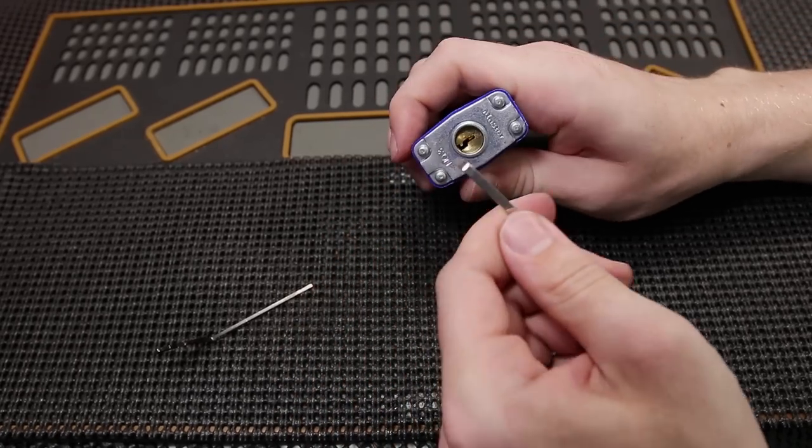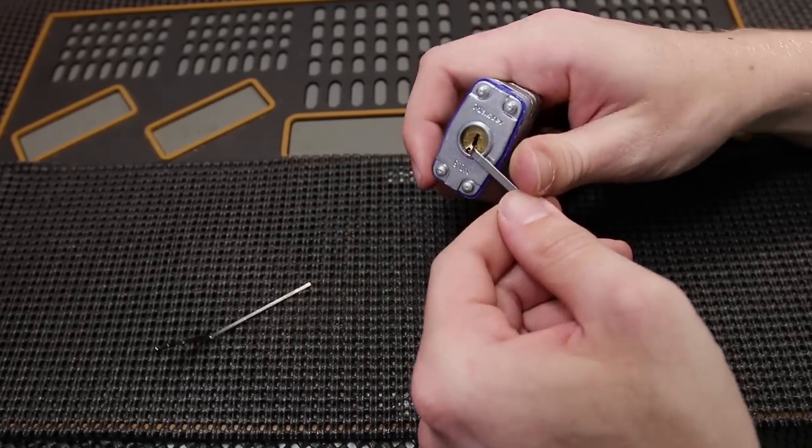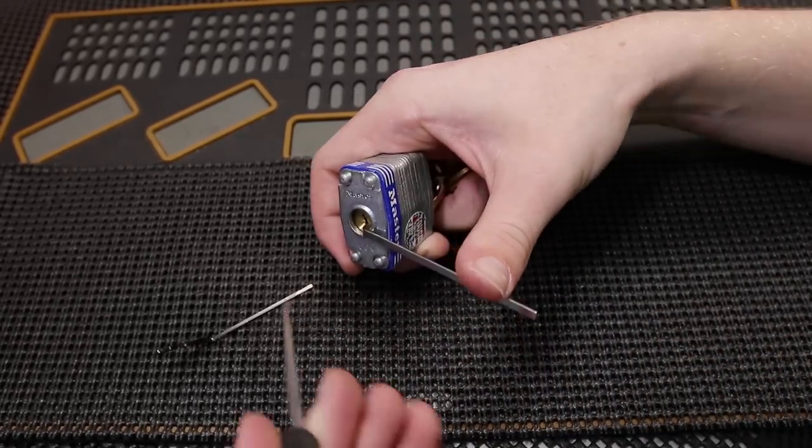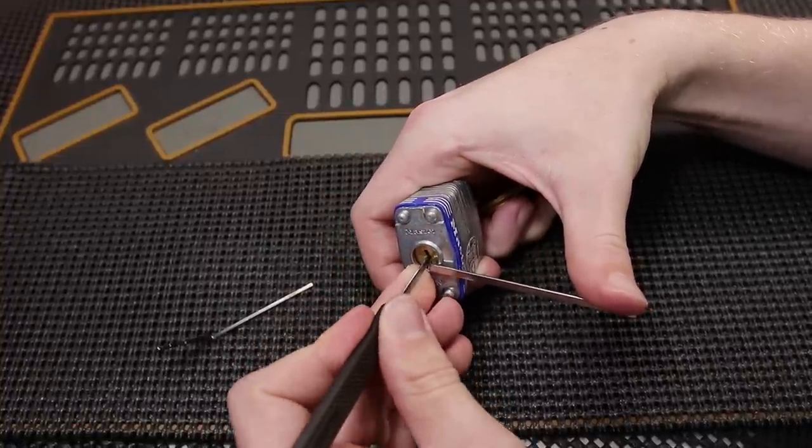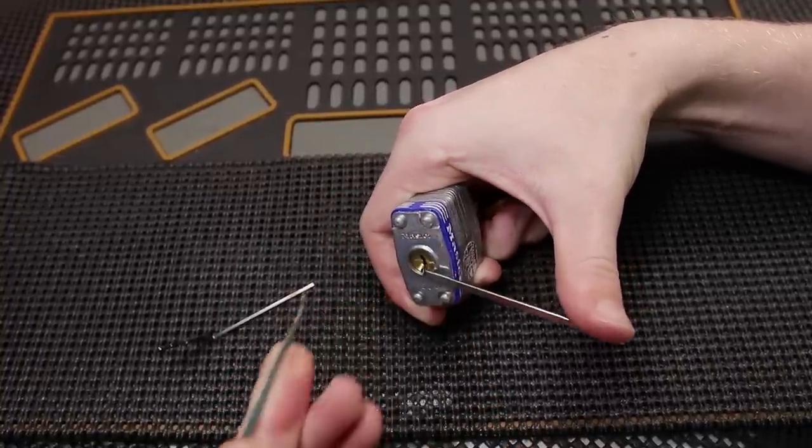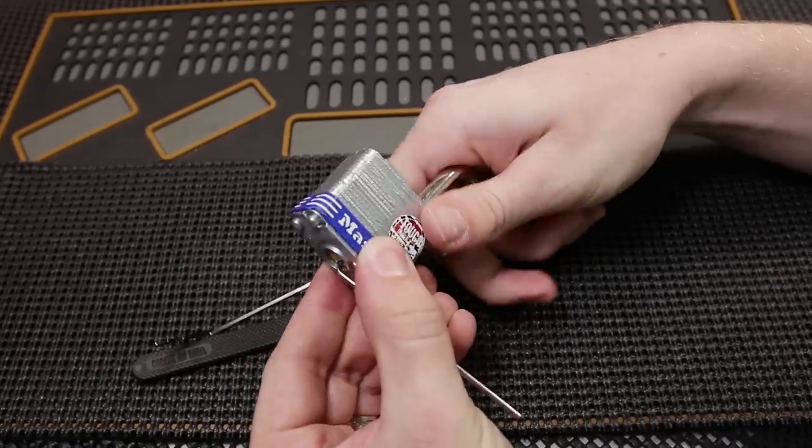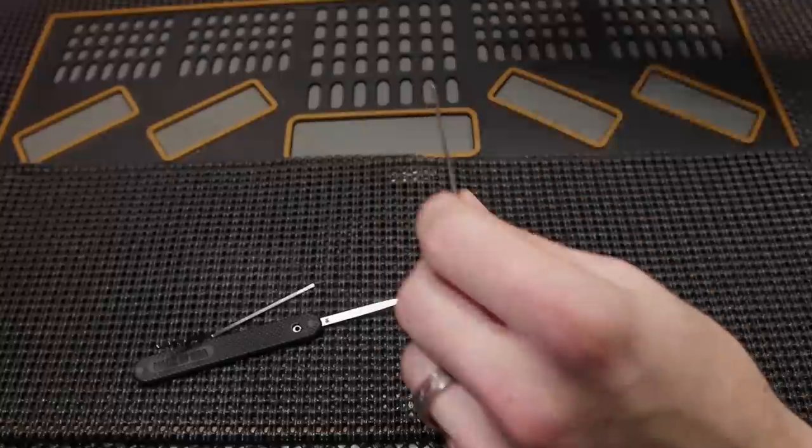But when you're using commercial picks, you can start to do some techniques that you would not normally be able to do with a bobby pin. On this Master Lock number 3, I can do the zipping technique. It's just light tension. You insert your pick, and you pull it out rapidly, and you're able to set all those pins very quickly.